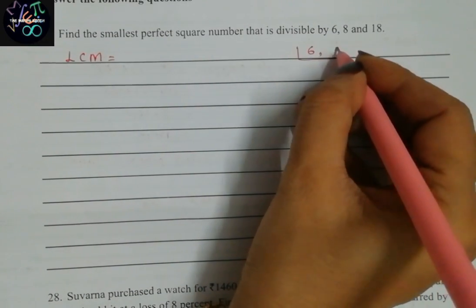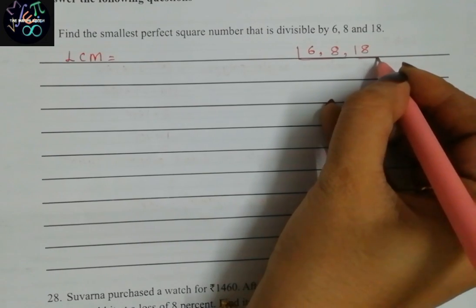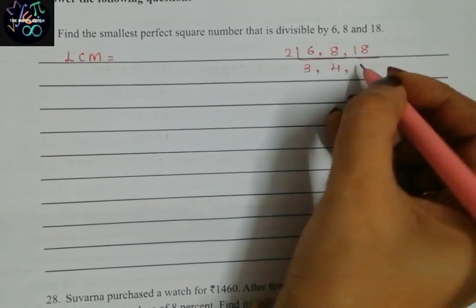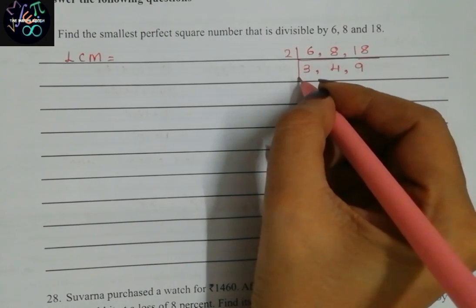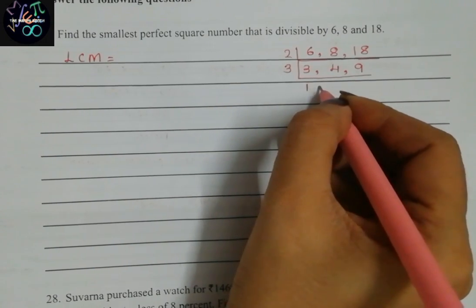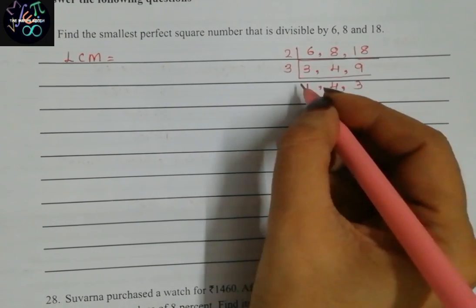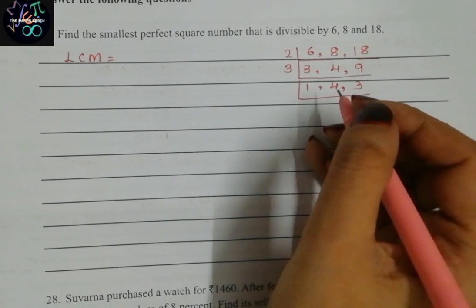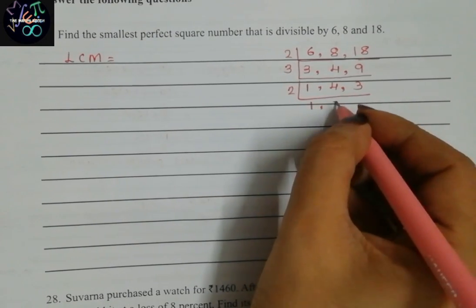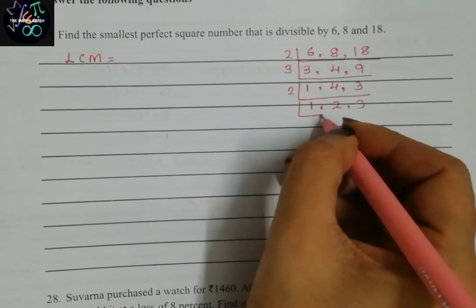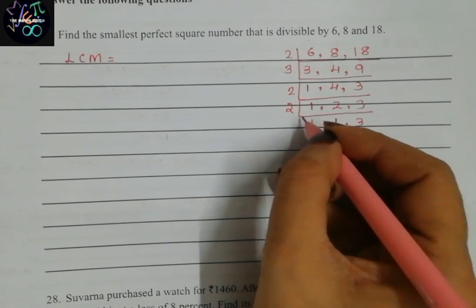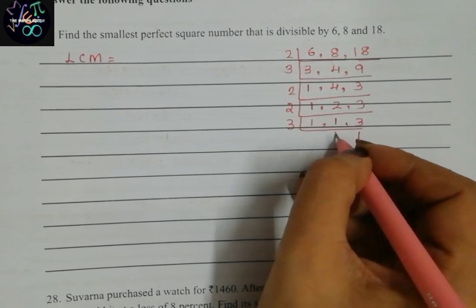Let us find LCM of 6, 8, and 18. I'll try with the 2 table. 2 threes are 6, 2 fours are 8, 2 nines are 18. Now I will go with the 3 table. 3 ones are 3, 4 I will keep as it is, 3 threes are 9. Then I will keep 1 and 2 as it is. Then 2 ones are 2, 3 will be as it is, and 1 will be as it is. Then 3 ones are 3.